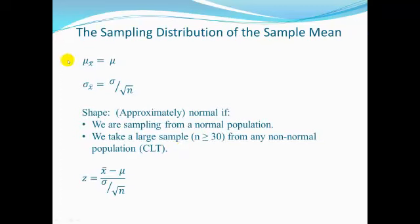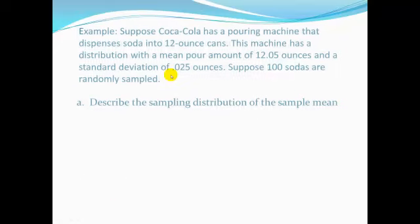With these three properties — mean, standard deviation, and shape — we can do some work. When working with normal populations, we created a Z-score: X minus mu over sigma. That's the X version. Now we're going to use the X-bar version: subtract off the mean and divide by the standard deviation of x-bars, which is sigma over the square root of n. These two Z-scores are very similar in numerator but differ in the denominator.